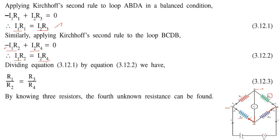Dividing these two equations, we get R1/R2 = R3/R4. By knowing any three resistors, the fourth can be easily found out.